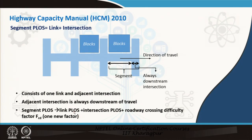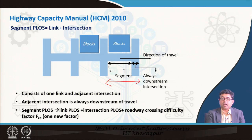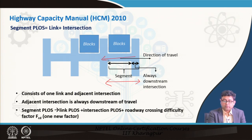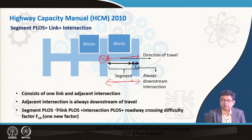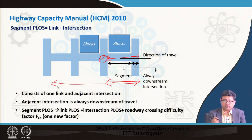As you remember, what is a segment and what is a facility? A segment is a combination of an intersection and a link, as long as you have a signalized intersection. If you do not have a signalized intersection between two blocks, then you continue until you find a signalized intersection. A facility is the entire summation of all the segments.